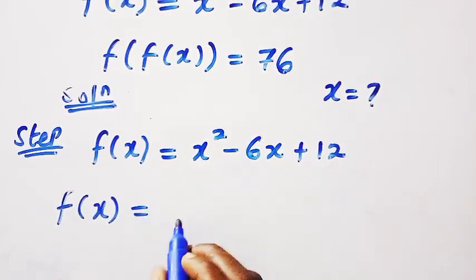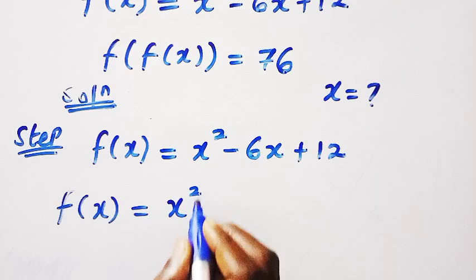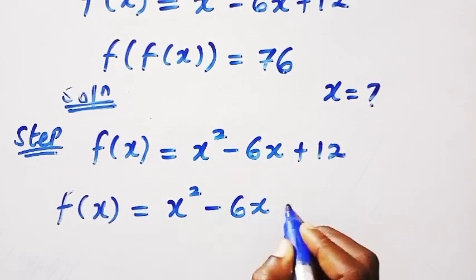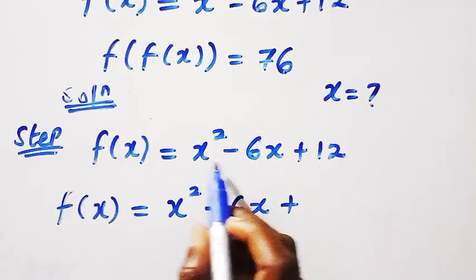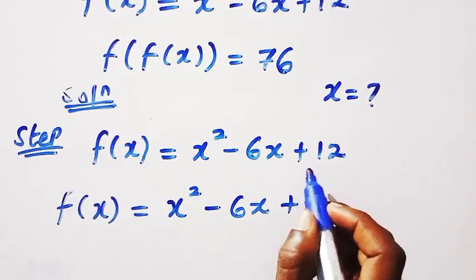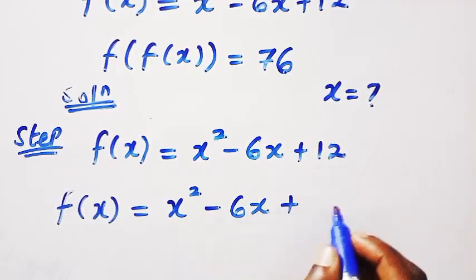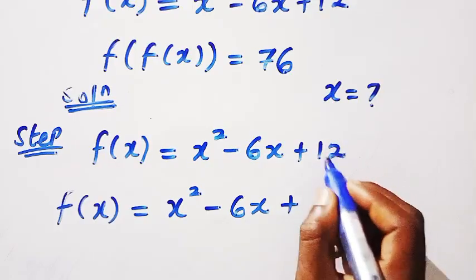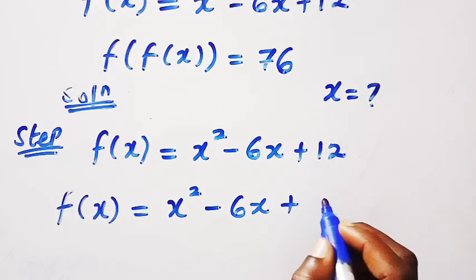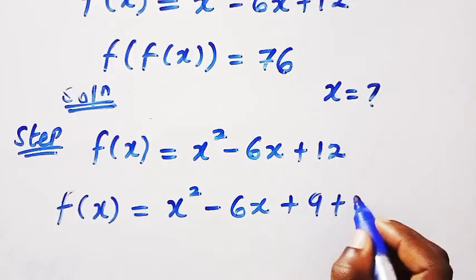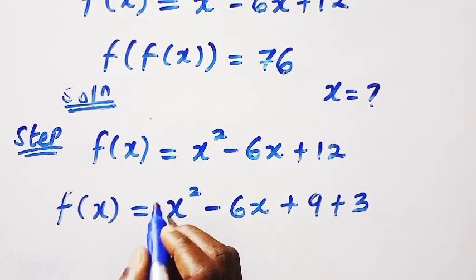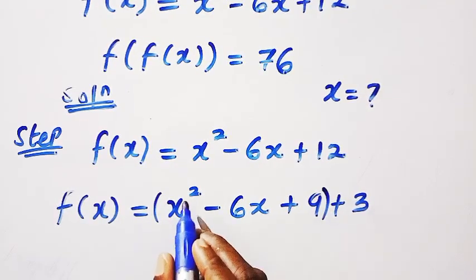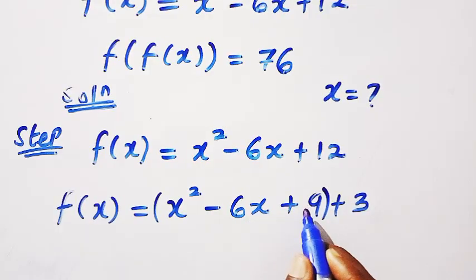That is what's called vertex form. So here we have f of x equals, let's separate this. We have x squared minus 6x plus, we are trying to factor out all this. But this is not factorizable straight. So we have to break this thing into, the 12 here can be written as 9 plus 3.